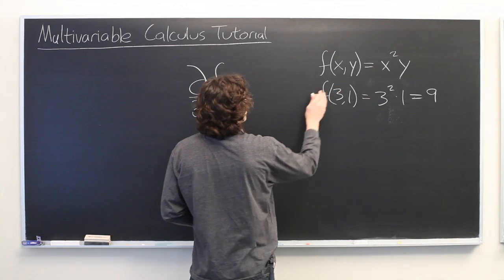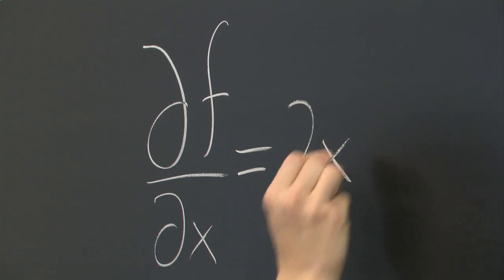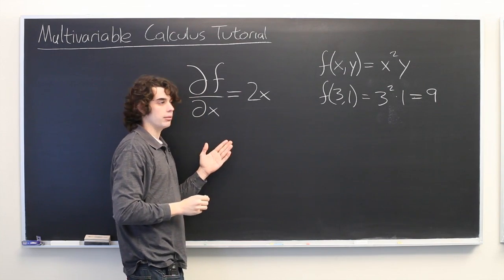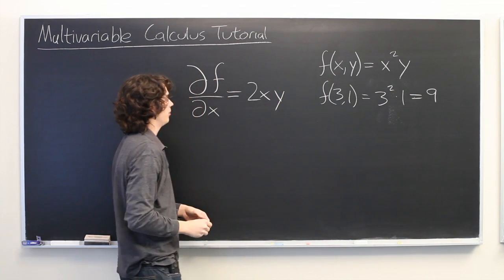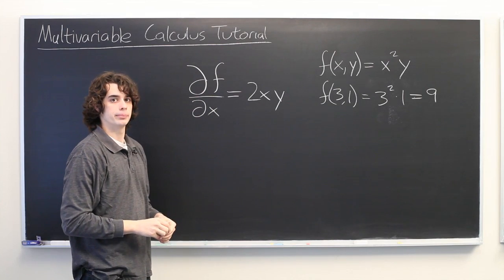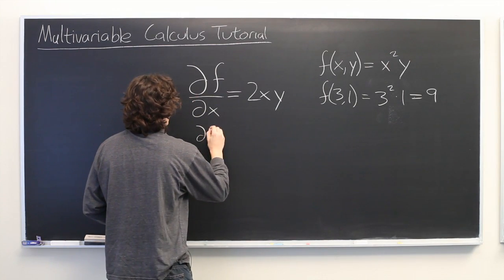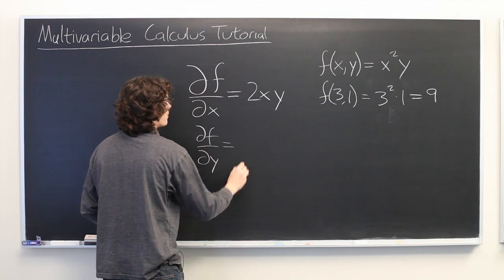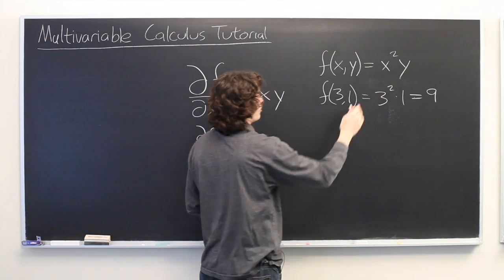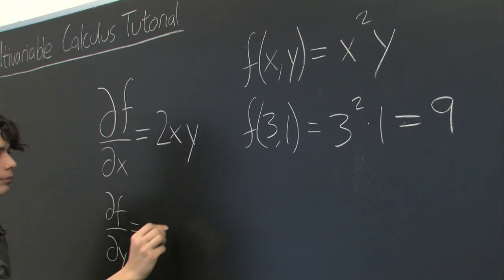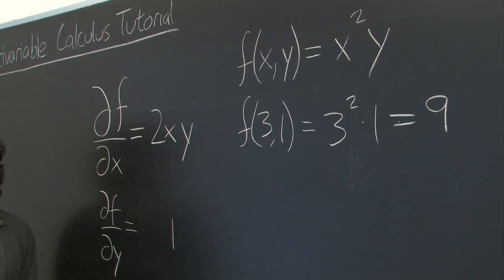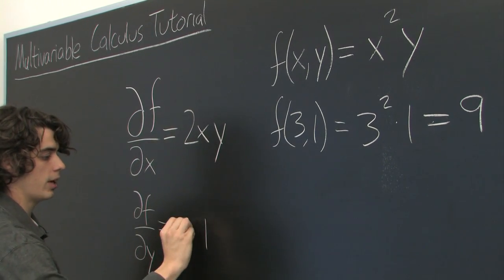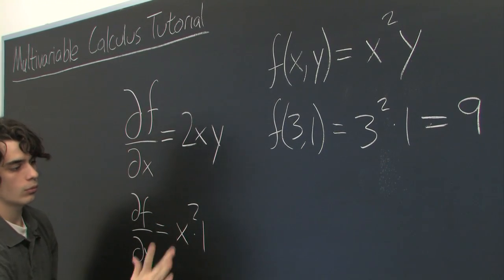So, the derivative of x squared is 2x, and since here we are pretending for the moment that y is a constant, we simply multiply by that constant, and we get 2xy. And we can do the same for the partial derivative with respect to y. Well, the derivative of y with respect to y is just 1, and here we are assuming that x squared is now a constant. We get x squared times 1, or simply x squared.